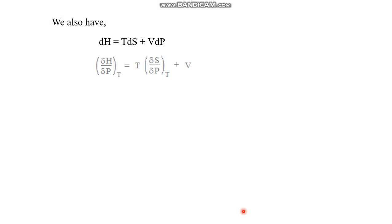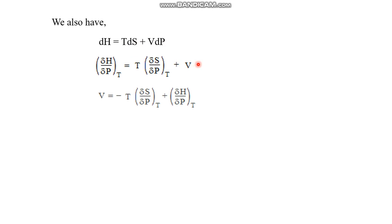Similarly, we obtain another equation starting from dH = TdS + VdP. Dividing both sides by dP and imposing constant temperature, the left side becomes (∂H/∂P)_T, the right side gives T·(∂S/∂P)_T, and dP/dP cancels to leave simply +V. After rearranging, we get: V = −T·(∂S/∂P)_T + (∂H/∂P)_T.